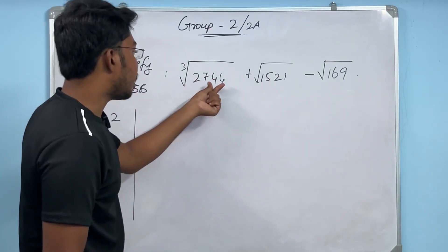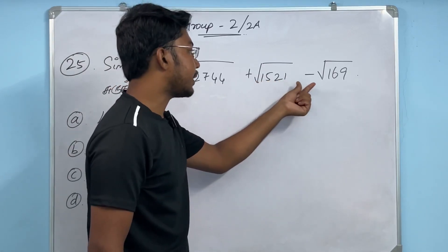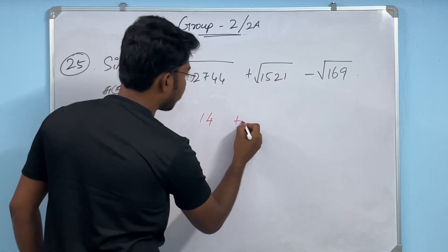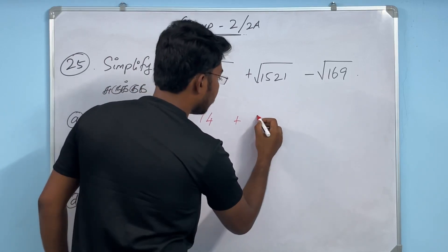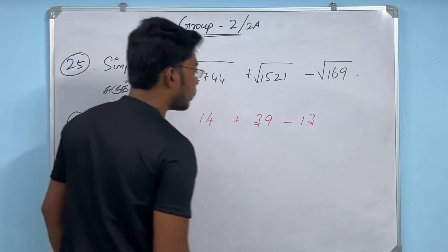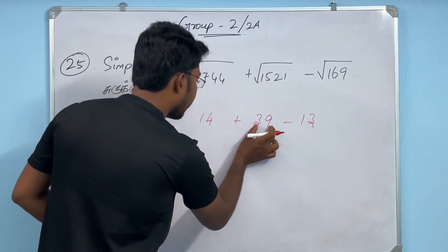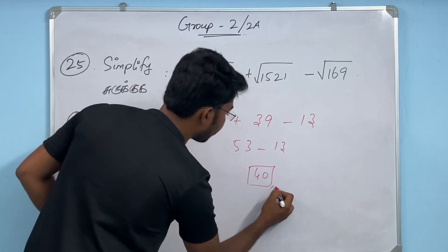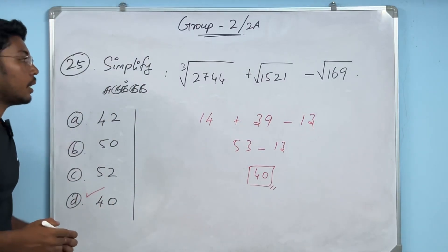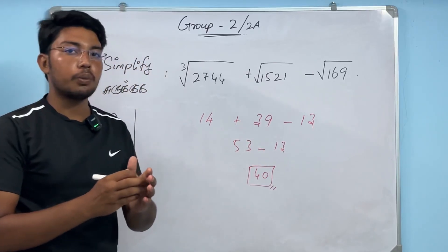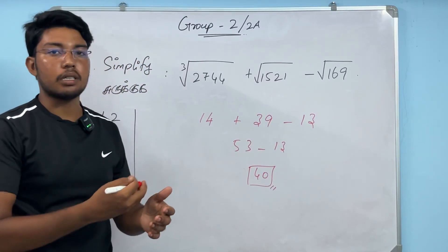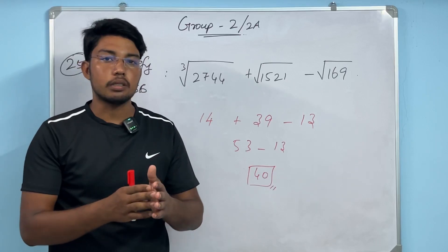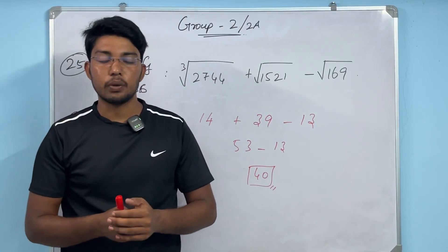Last question: cube root of 2744 plus square root of 1521 minus square root of 169. Cube root of 2744 = 14, square root of 1521 = 39, square root of 169 = 13. So 14 + 39 − 13 = 40. Wait — 39 + 14 = 53, minus 13 = 40. Answer: 40. A shortcut video for square roots and cube roots is already uploaded — check it out. That completes all 25 questions. If you have any doubts, tell us in the comments and we'll clear them in the next video. Thanks for watching.